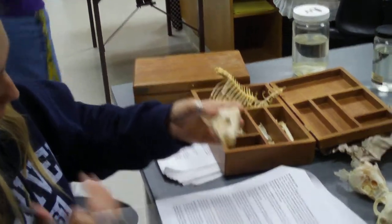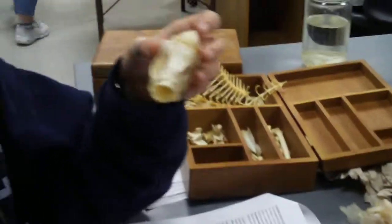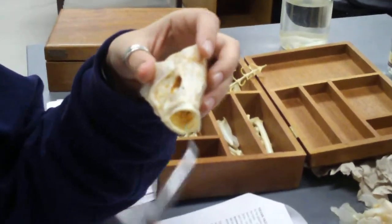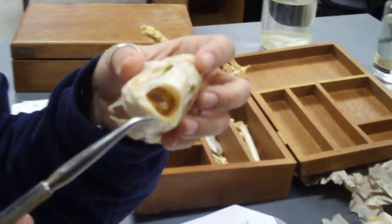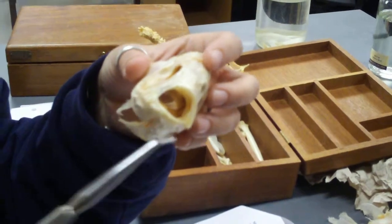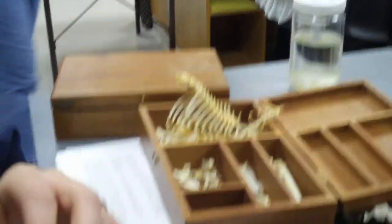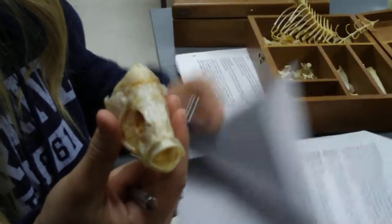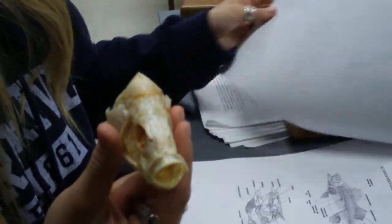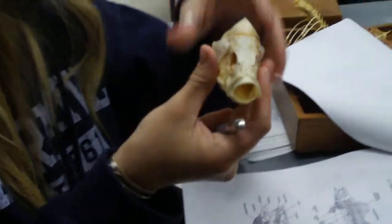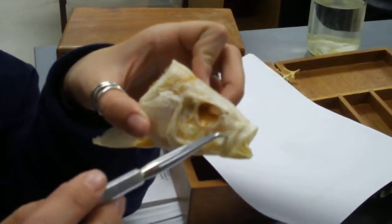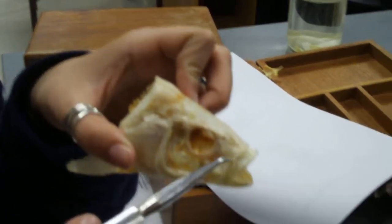Okay. Pre maxilla, dentaries down here. So dentaries, this whole part. Pre maxilla. Maxilla is this kind of triangular thing on the side. Can you guys all see that? Maxilla.